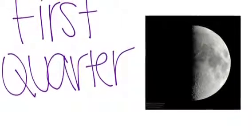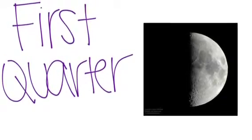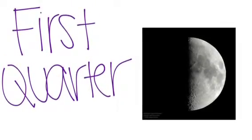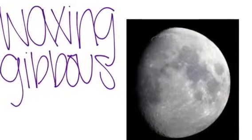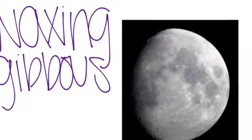First quarter: when the moon is at a 90 degree angle with the Earth and the sun, so we are seeing exactly half the lit moon. Waxing gibbous: gibbous just means more than one half lit.